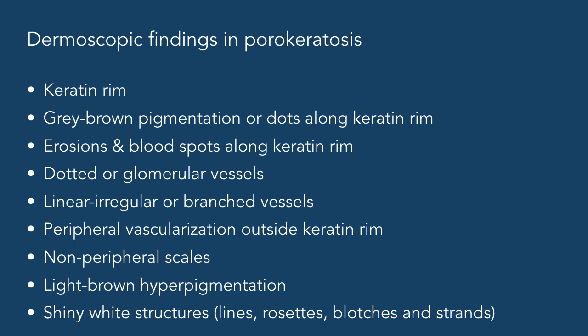The most common features of porokeratosis, regardless of the subtype, are listed here. Without a doubt, the keratin rim is the most common finding in dermoscopy. Although it can be found in almost all cases, sometimes only partial rims are visible. Along the keratin rim, we can sometimes find small areas of grey-brown pigmentation or grey-brown dots. In other cases, erosions or blood spots are present along the keratin rim.